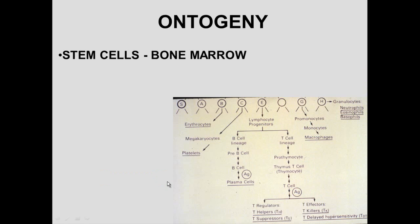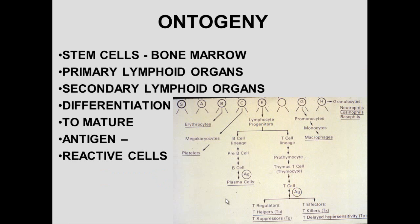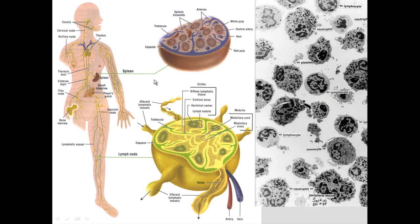Stem cells in the bone marrow give rise to both white and red blood cells, feeding into primary and secondary organs to produce reactive cells. In summary, throughout the body you have lymph nodes, Peyer's patches, spleen, bone marrow, thymus, and tonsils all working together to combat infection and maintain a germ-free environment in the body.